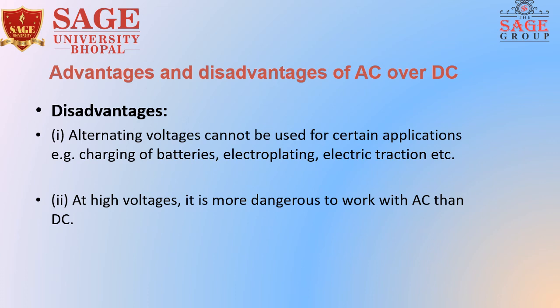Advantages of AC over DC: First, generation of AC is cheaper than DC. Second, when AC is supplied at higher voltage, transmission losses are small compared to DC transmission. Third, AC can easily be converted into DC with the help of a rectifier. Disadvantages: First, alternating voltage cannot be used for certain applications such as charging batteries, electroplating, and electric traction. Second, at high voltage it is more dangerous to work with AC than DC, especially single phase or three phase.